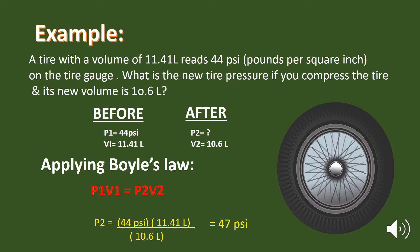Let's take an example. A tire with a volume of 11.41 liters reads 44 psi on the tire gauge. What is the new tire pressure if you compress the tire and its new volume is 10.6 liters? Here we have the data: pressure P1 is 44 psi and volume V1 is 11.41 liters, whereas pressure P2 is unknown and volume V2 is equal to 10.6 liters. By applying Boyle's law, P1V1 is equal to P2V2, we can easily find out the final pressure P2.